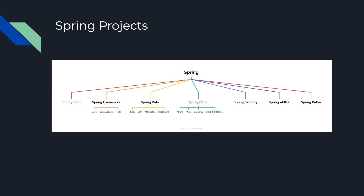In Spring Framework we will learn about core features, data access support — for example, if we want to do something with a database we can use what Spring Framework provides related to data access. Spring MVC is used to develop web projects; when we develop a web project using Spring MVC, we implicitly follow certain design patterns and best practices, such as the MVC — Model, View, and Controller — pattern.